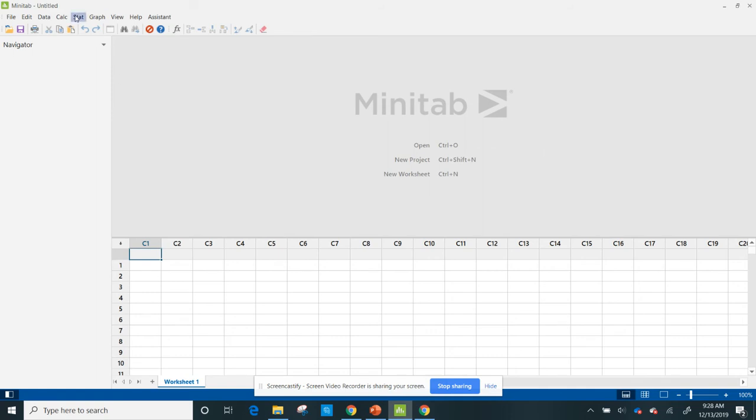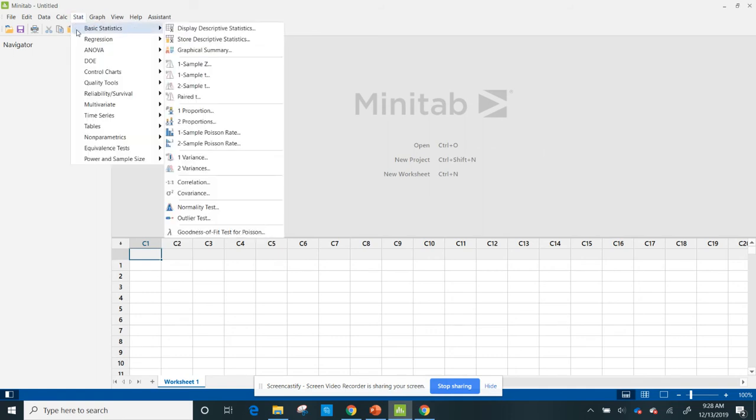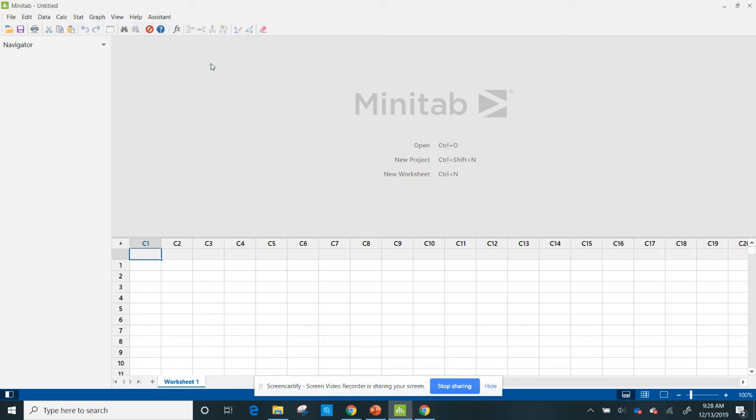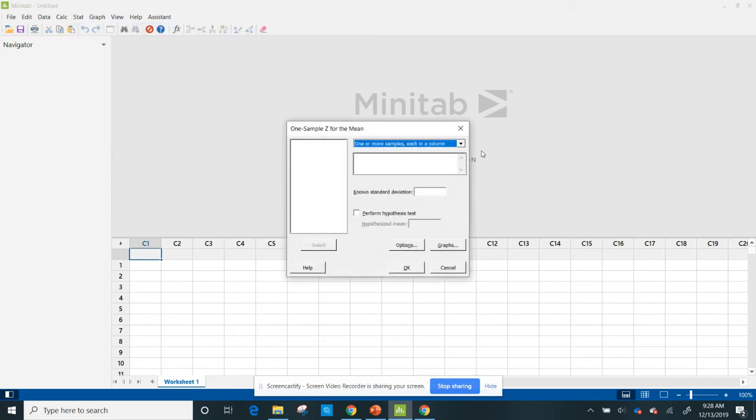I'm going to go to basic statistics, and I'm going to go to 1 sample Z. Since I'm not using any data – the problem gave me no data to use – I'm going to click on this little down arrow and do Summarize Data, and it gives me a different screen.